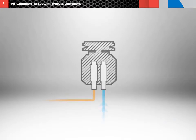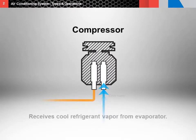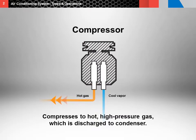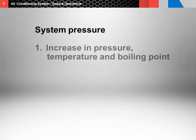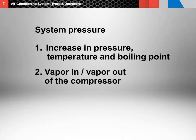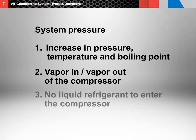Cool vapor is drawn into the compressor from the evaporator. As it passes through, it is compressed. During the compression process, the refrigerant changes pressure, temperature, and boiling point. The system pressure increases, and as it does, it also increases the temperature and boiling point of the refrigerant. These increases are very important. The refrigerant in the compressor remains a vapor — vapor in and vapor out. Liquids cannot be compressed; therefore, you never want liquid refrigerant to enter the compressor.